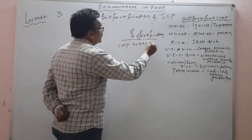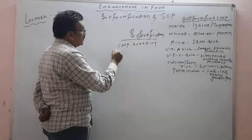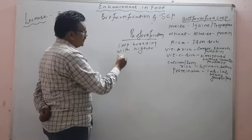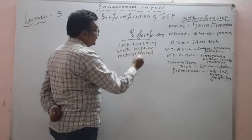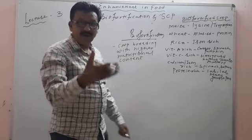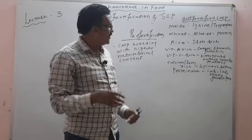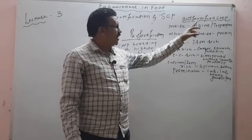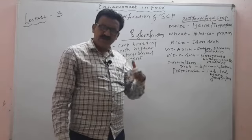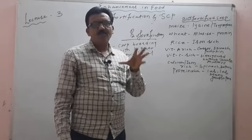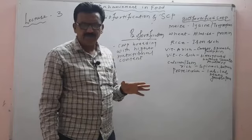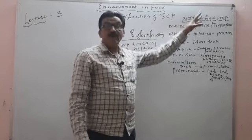Crop Breeding with Higher Nutritional Content — it is the method of producing crop plants which contain higher nutritional content such as amino acids, proteins, vitamins, and calcium. These are the bio-fortified crop plants.